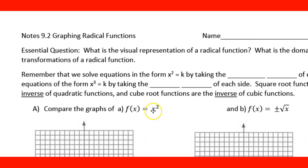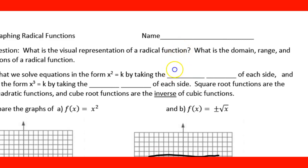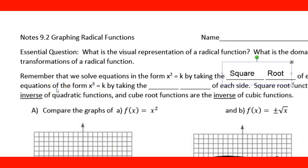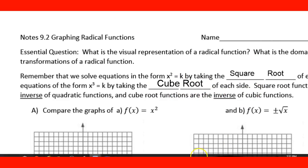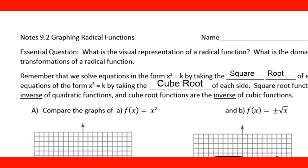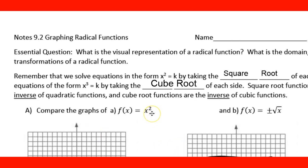Remember that we solve equations of the form x² = k by taking the square root of each side, and equations of the form x³ = k by taking the cube root of each side. Square root functions are the inverse of quadratic functions, and cube root functions are the inverse of cubic functions — it just means you use a square root to undo a square, and a cube root to undo a cube.